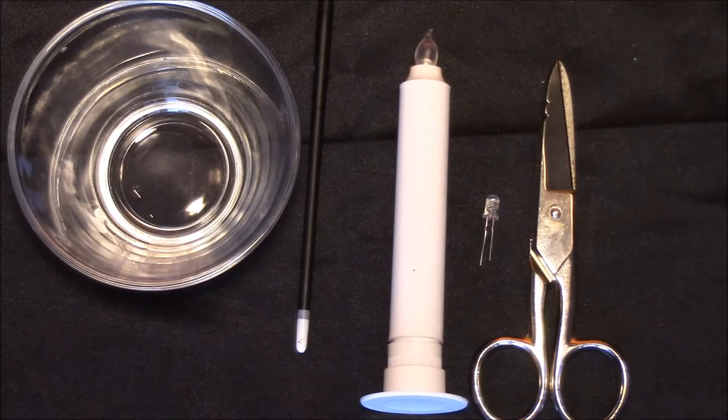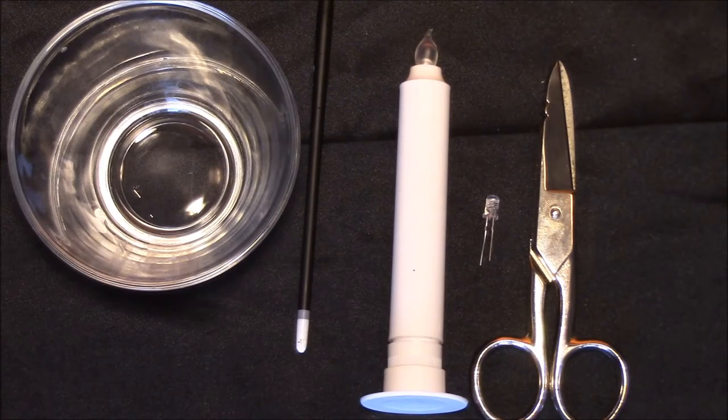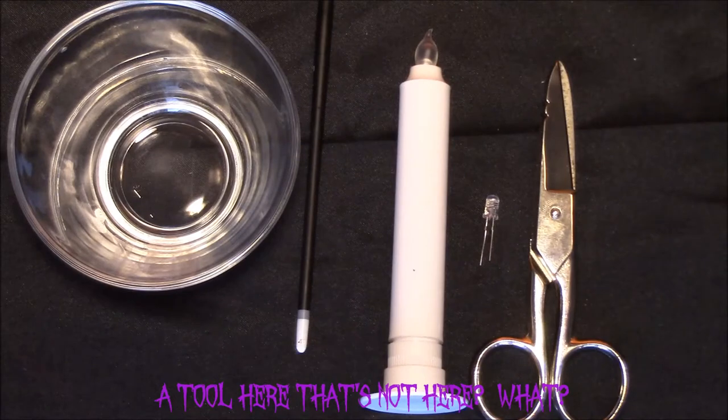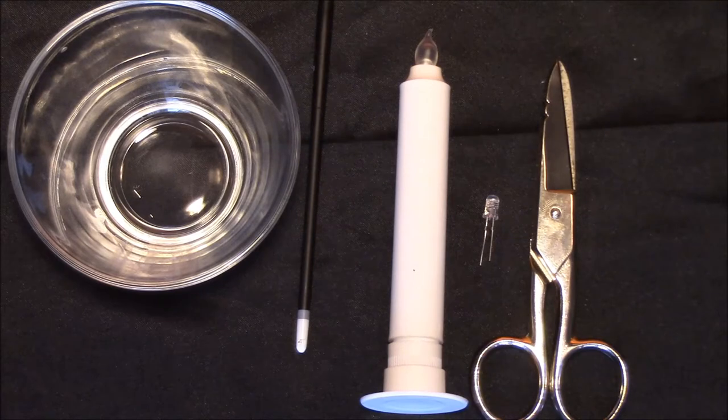That's really all you need for this modification. A couple of optional tools are a hot glue gun and a pair of pliers. You'll notice there's one tool not here. Most LED modifications use a soldering iron with solder, but you don't need them. This is a solderless modification, which makes it really simple.